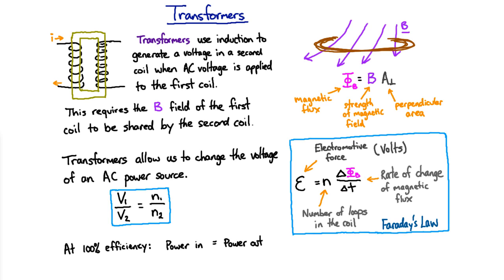So at 100% efficiency, the power in has to be equal to the power out. And we can remember the formula for the power in electrical circuits because it's just the energy per unit time. And the voltage is the energy per unit charge, and the current is the charge per unit time. And so the power is just the voltage times the current. And so the power in equaling the power out would be the voltage times the current for the first coil would be the voltage times the current for the second coil.